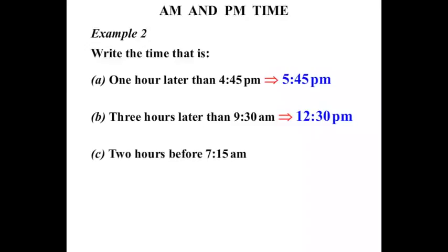What about two hours before 7:15 AM? Well two hours earlier than that would be 5:15 and it would still be AM.